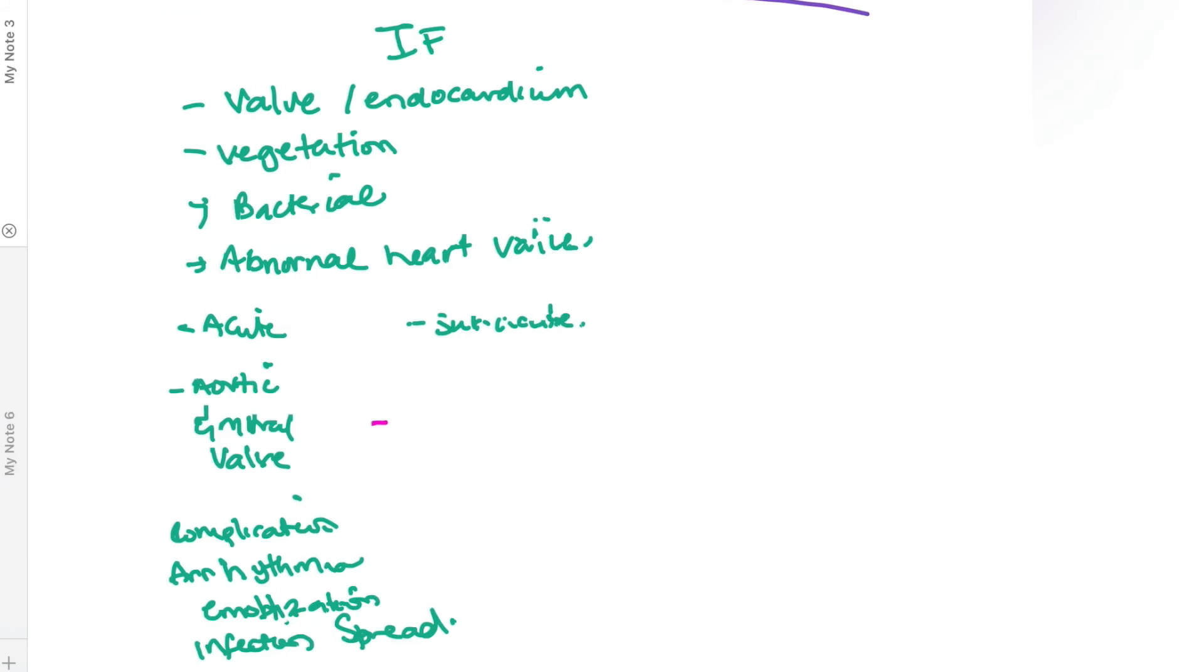Now we're going to look at infective endocarditis. Largely in this region of the world, infective endocarditis stems from rheumatic heart disease. However, there are other causes—any abnormal valves, prosthetic valves, or IV drug users can be predisposed to getting infective endocarditis. Infective endocarditis is usually a bacterial infection occurring in the valves or endocardium, and it leads to the formation of vegetations.